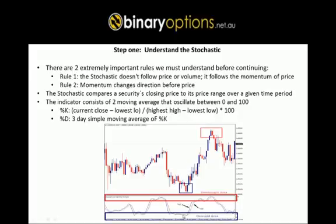When the stochastic oscillator fluctuates below the 20 level we are in an oversold area, and when the oscillator turns back up and crosses above the 20 level we have a bullish engulfing candle and a continuation of the trend to the upside. Then when the oscillator is in an overbought area and crosses below the 80 level, we have a continuation of the move to the downside.